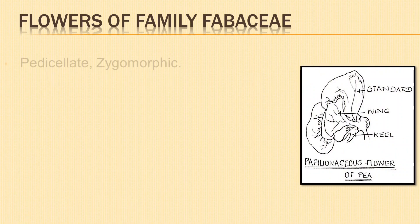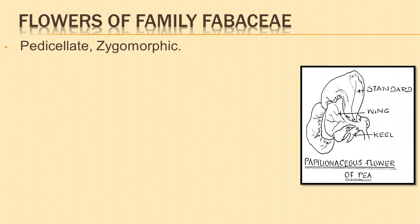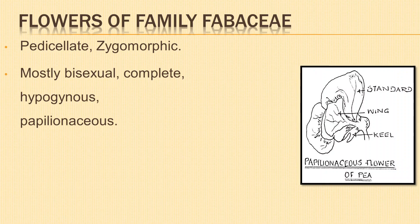Flowers are usually pedicellate. They are zygomorphic — divisible into two similar halves by one vertical section only — and mostly bisexual or hermaphrodite, meaning male stamens and female carpels are present in the same flower. Flowers are complete, bracteate, hypogynous (ovary in the highest position on the thalamus), and papilionaceous.